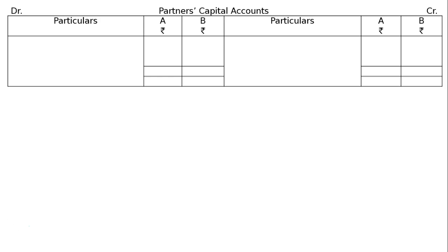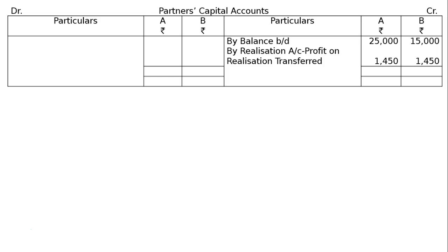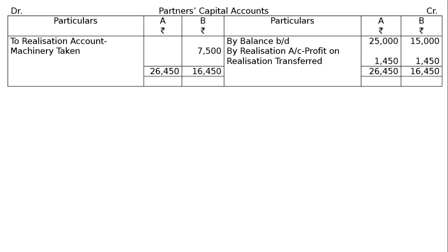Then prepare the capital accounts for A and B. By balance brought down: A Rs. 25,000 and B Rs. 15,000. By realization account — profit on realization transferred: A Rs. 1,450 and B Rs. 1,450 — both getting equal half profit. B took over the machinery, so debit realization account: machinery taken Rs. 7,500. After totalling the credit side and balancing, payments to cash account: A will receive Rs. 26,450 and B will receive Rs. 8,950.